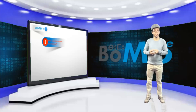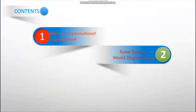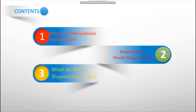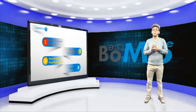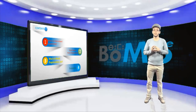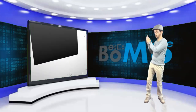We will cover four points in this part. First, what is an international organization? Second, we will mention some famous world organizations. Third, we will answer the question: what do world organizations do? And finally, in the evaluation section, I will test you with an easy quiz to see to what extent you grasp the lesson. So, let's go!